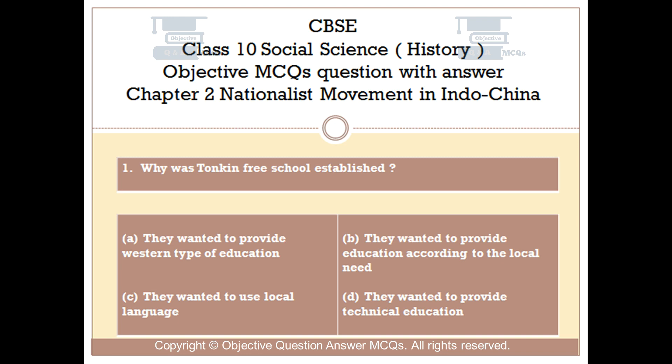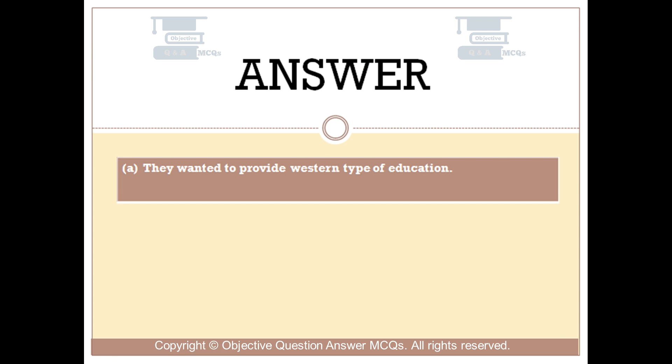Question number 1: Why was Tonkin Free School established? Option A: They wanted to provide western type of education. Option B: They wanted to provide education according to the local need. Option C: They wanted to use local language. Option D: They wanted to provide technical education. The right answer is Option A: They wanted to provide western type of education.